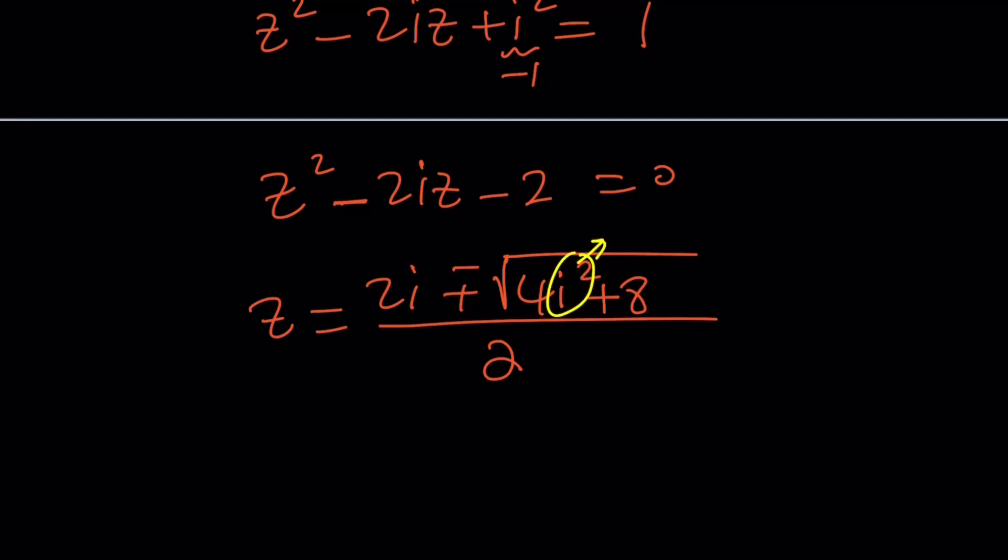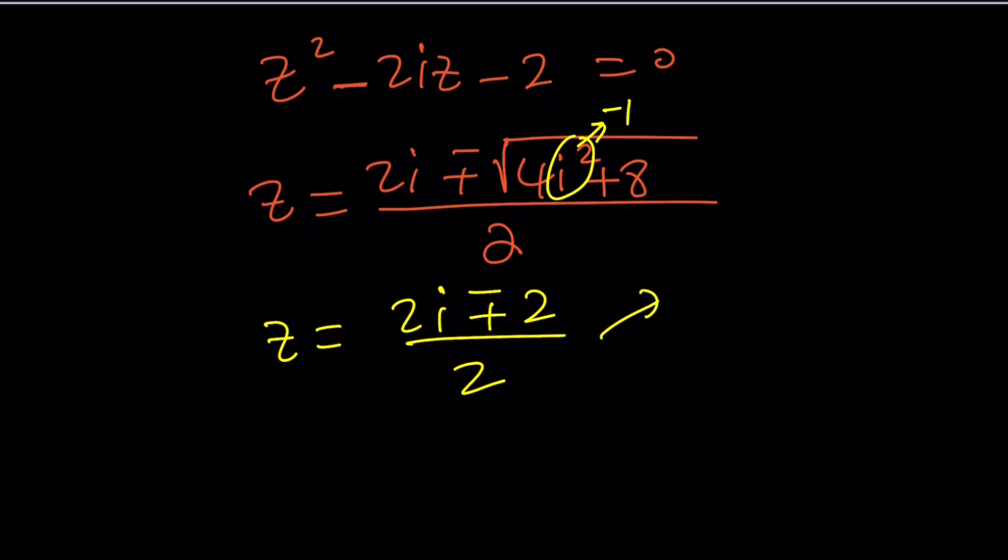So that's a positive answer, which is interesting. And then i² equals negative one. So inside the radical, we're going to have a positive 4 whose square root is ±2. So it's going to be (2i ± 2)/2.